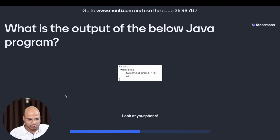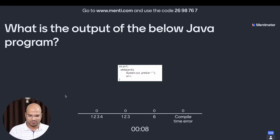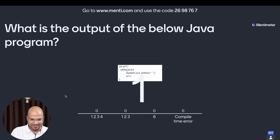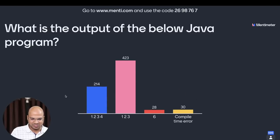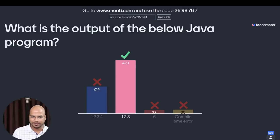Third question coming on your screen: what is the output of the below Java program? Don't be in a hurry — understand the question properly and then choose the answer. You still have 10 more seconds but 400 people already voted. We got 700 votes, and the majority are saying 1, 2, 3 — and that is correct. Why? Because the loop is running less than 4, not less than or equal to 4.